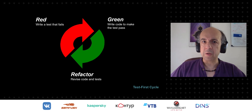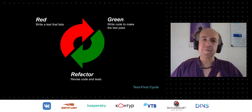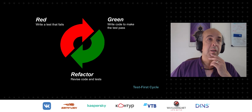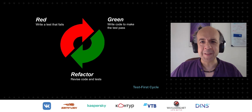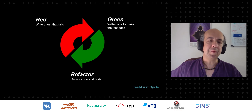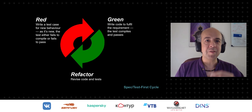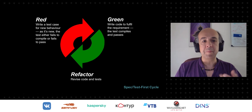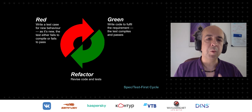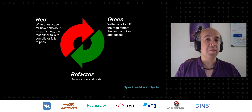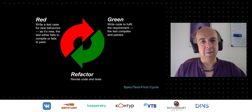I use TDD myself — it seems a very natural way to develop after you've got the habit. But it doesn't feel natural if the first thing you tell somebody is 'write something that doesn't work.' Let's elaborate: write a test case for new behavior — that's your goal. It's not to get red; it's to write new behavior. As it's new, the test either fails to compile or fails to pass — we consider both failures. Green is not just making the test pass; it's writing the code to fulfill the requirement. We've shifted this to a specification-oriented cycle.